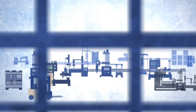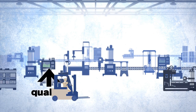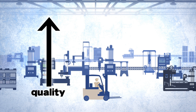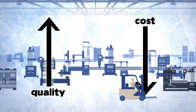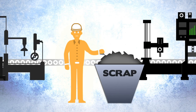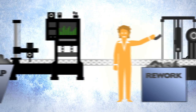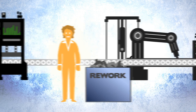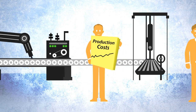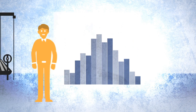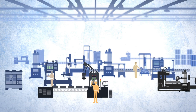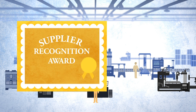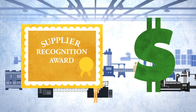Optimized processes — processes that produce the highest quality product for the lowest possible cost. They're what every manufacturer is searching for. How can we cut down on scrap? How can we reduce rework? How can we lower production costs? How can we get closer to target? Perhaps more than any other factor, it's the quality of your manufacturing processes that determines customer loyalty and consistent profit.